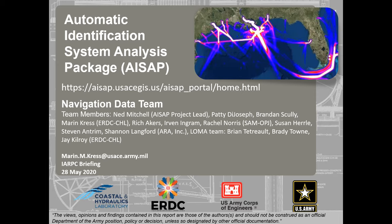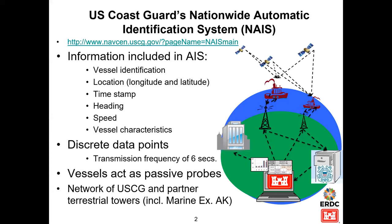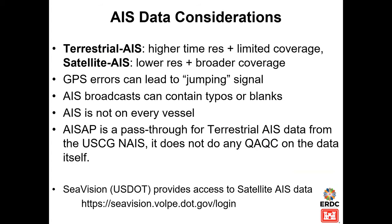Discrete data points can have transmission frequency as close as six seconds. For our research, we often treat vessels as passive probes representing weather conditions or infrastructure state. There is a network of both Coast Guard maintained and partner maintained terrestrial towers, including the Marine Exchange of Alaska. ASAP gets just terrestrial data, so there's higher time resolution but potentially limited spatial coverage depending on tower location. Satellite AIS provides about 15-minute time resolution but broader spatial coverage.